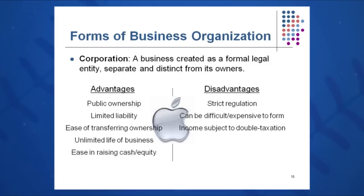The third type of business organization is a corporation, which is a business separate and distinct — really a legal person separate and distinct from its owners. A corporation can borrow money, buy property, can sue and be sued, and can own stock in other corporations. Public ownership is one of the advantages — you can sell stock in the corporation. A key advantage is limited liability, so shareholders are not personally liable. You can protect your own personal assets by forming a corporation. It's very easy to transfer ownership by selling shares of stock, and the business has unlimited life.